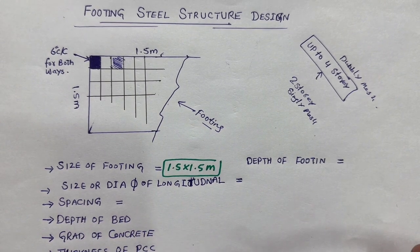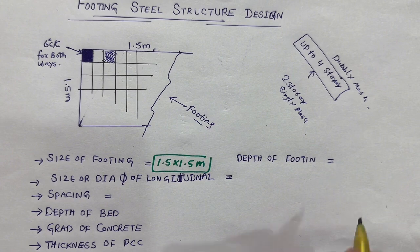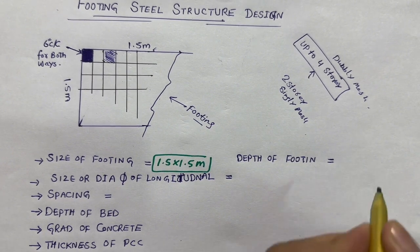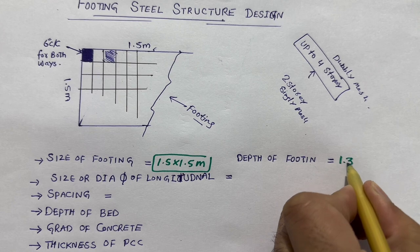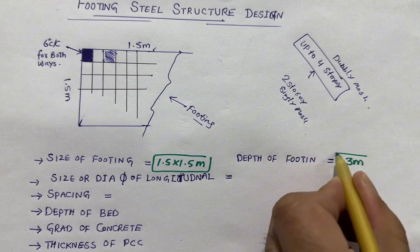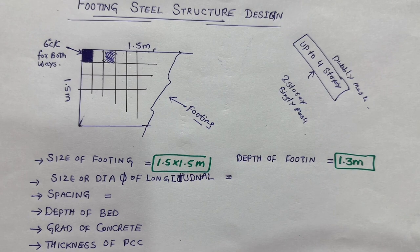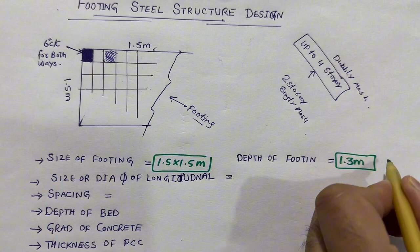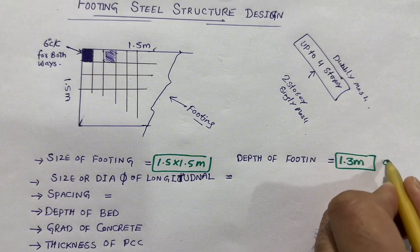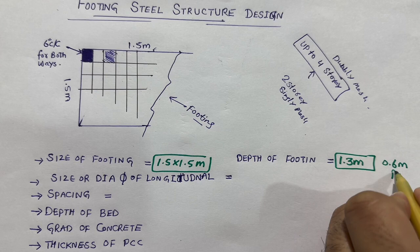Next, what should be the depth of footing? The depth of footing should not be less than 1.3 meter — you can keep up to 1.5 meter. You can also include the plinth level, which you can normally keep up to 0.6 meter.